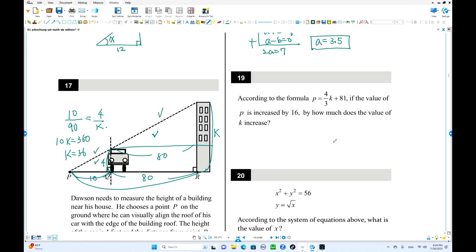Number 19. According to the formula, p equals 4 over 3k plus 81. If the value of p is increased by 16, delta p is 16. So how much does the value of k increase? You can find delta k. Change in k. But this equation is linear. Looks like y equals 4 over 3 x plus 81. That is better looking. Slope is 4 over 3. What is the slope? Change in p over change in k. Delta p over delta k. That's the slope. But this is given 16. So how can you find delta k there? 4 times delta k equals 48. Divide by 4. Delta k equals 12. There is increase. 12 in k. 12 is the answer.